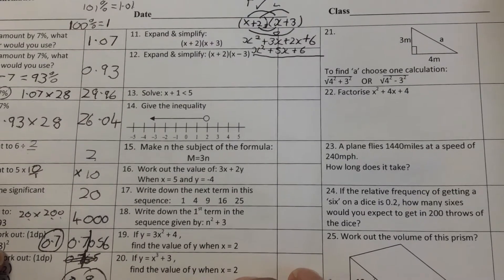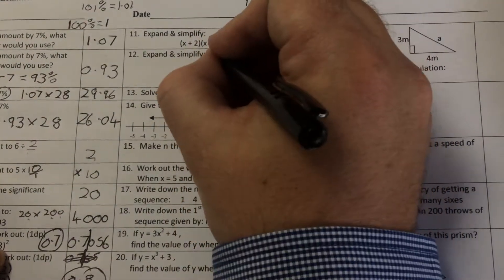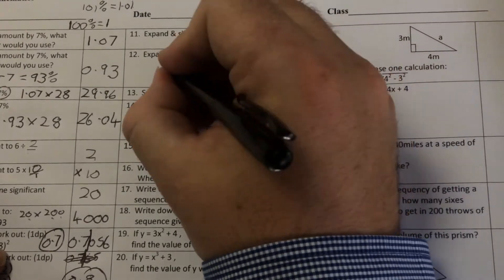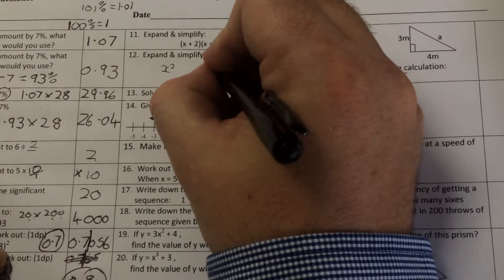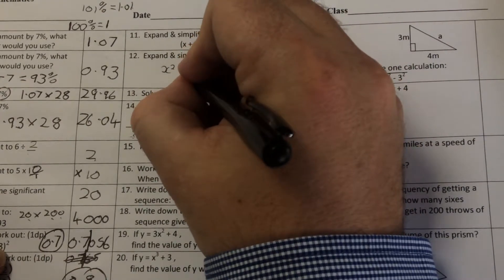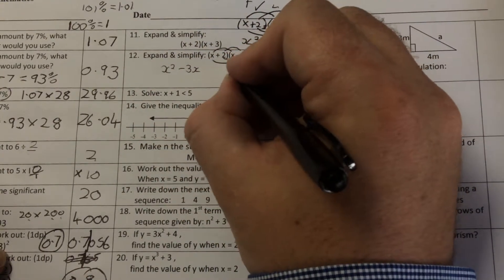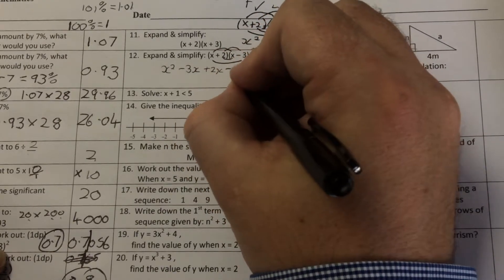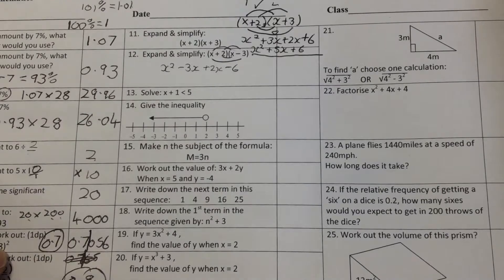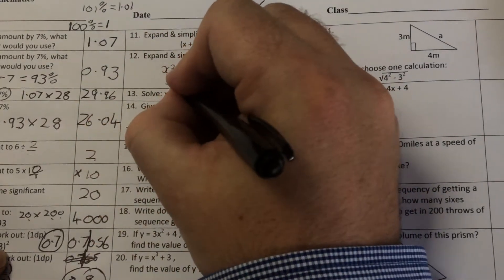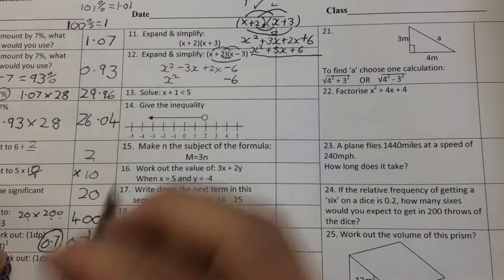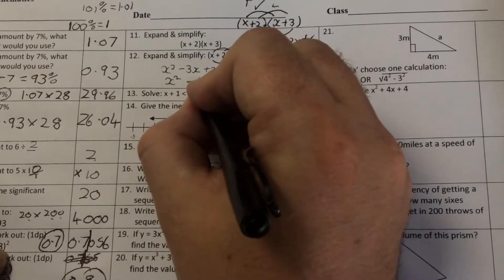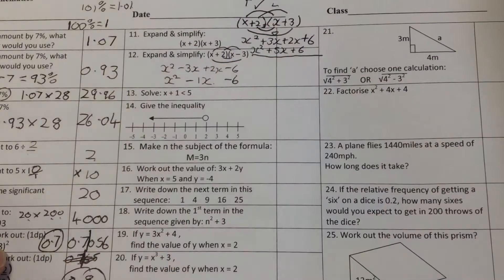Question number 12. Expand and simplify. Exactly the same. I would use the FOIL. So x times x is x squared. Minus 3 times x is minus 3x. Then I've got a plus 2 times x is plus 2x. And then 2 times minus 3 is minus 6. So we're left with x squared. We've got a minus 6 on the end. And then we've got minus 3x add 2x. So minus 3x add 2x is minus 1x.